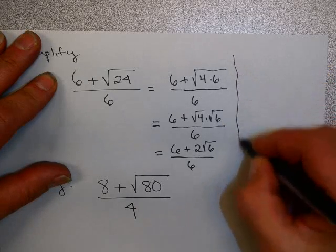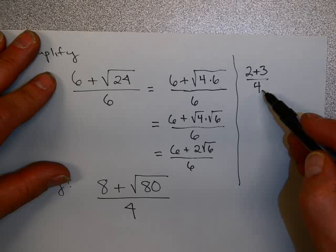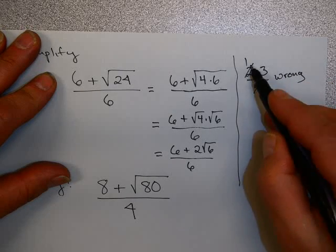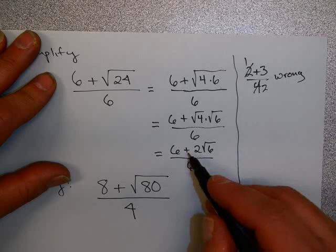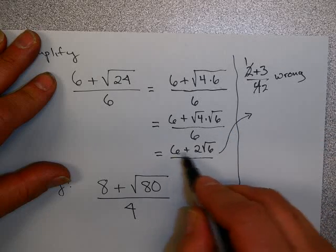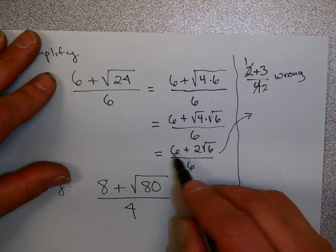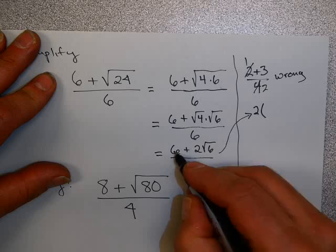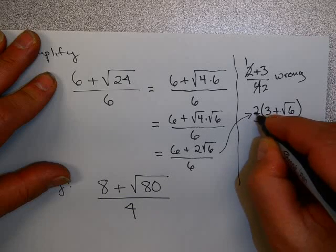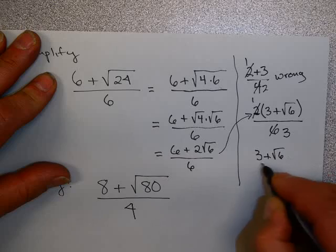Now resist the temptation here to cross out these 6's. They do not divide. To think about that, think about this problem. 2 plus 3 over 4. Everyone knows this is 5/4, correct? But if I were to do this and this, that would be wrong because that gives me 4 over 2, which isn't 5/4. So in order to cancel like this or divide out, you need to have multiplication. So instead of canceling these 6's or this 6 and this 2, I'm looking at the top and I'm looking for what is the greatest number that I can factor out of that. And that is 2. 2 times 3 is 6. And 2 times the square root of 6 is 2 times the square root of 6. Now, since this sign is multiplication, 2 goes in once in 3 times and I get 3 plus the square root of 6 over 3.